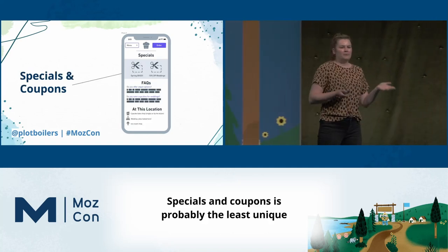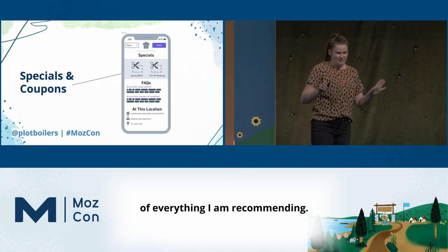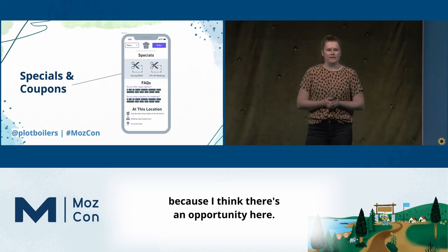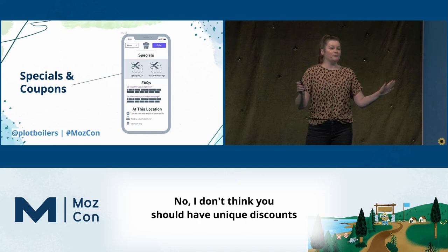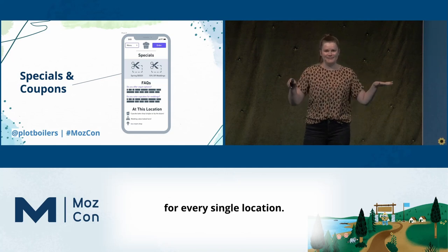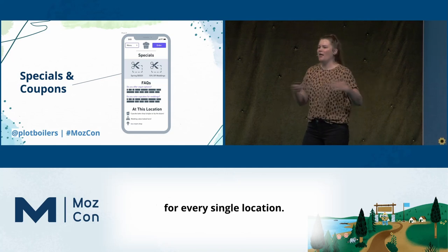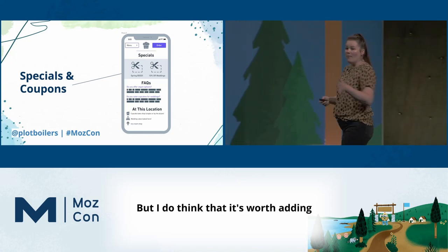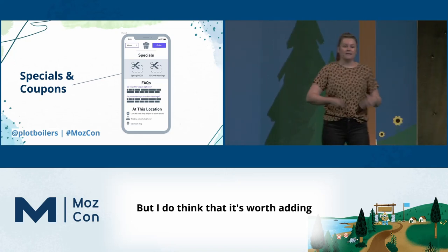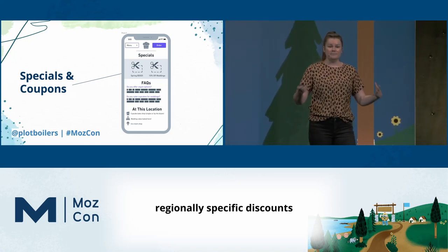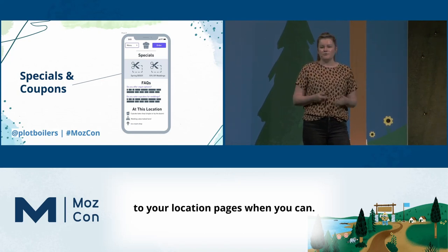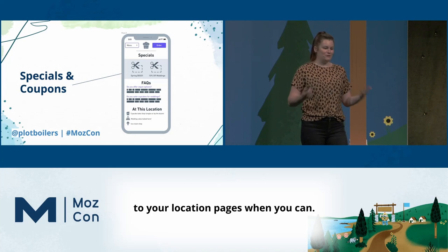Specials and coupons is probably the least unique of everything I'm recommending. I wanted to include it because I think there's an opportunity here. I don't think you should have unique discounts for every single location — that would get really complicated. But it's worth adding regionally specific discounts and playing around with adding another layer of unique and specific value to your location pages when you can.